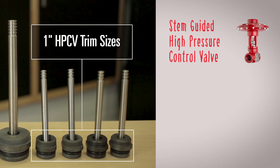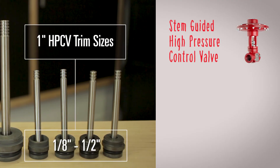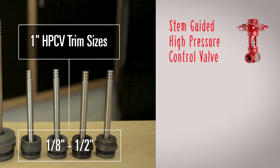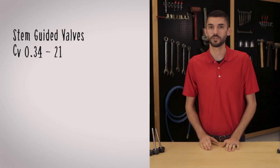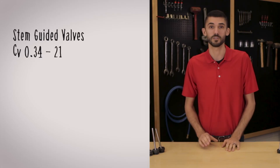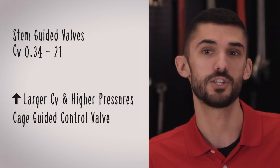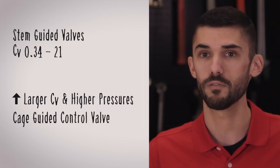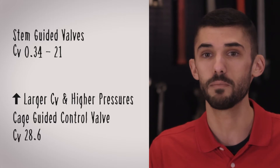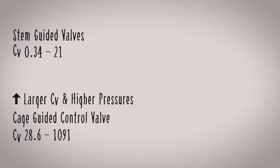Our 1-inch stem-guided valves come with trim options ranging from one-eighth inch to half inch. Stem-guided valves have small CVs from 0.34 to 21, and they can handle low flow as well as high pressure drop applications where you have a small CV requirement. For larger CVs and higher pressures, use Kimray's cage-guided control valves — they're a full port valve with CV ranges from 28.6 to 1,091, available in 2-inch through 10-inch sizes.